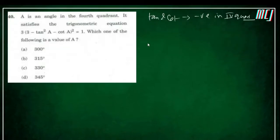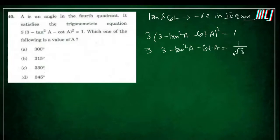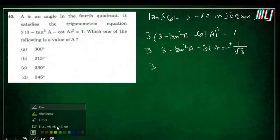Converting everything to tan: 3·(3 − tan²A) − cotA whole square = 1. This gives 3 − tan²A − cotA = ±(1/√3), leading to two cases — one for plus and one for minus.